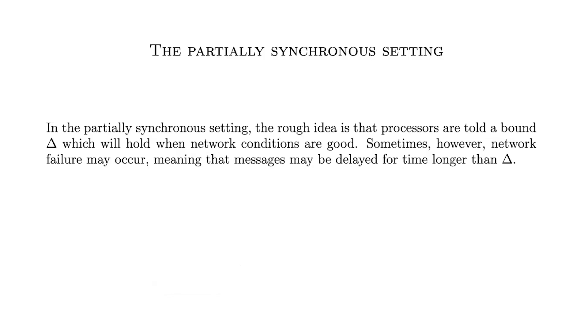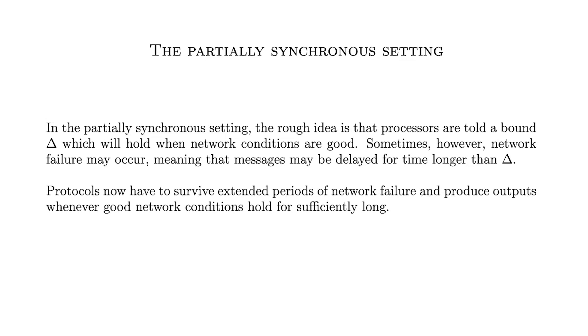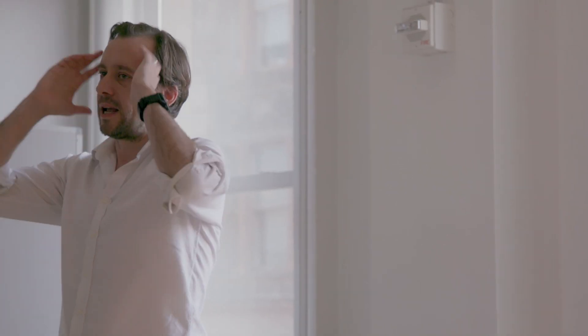Now we move to the partially synchronous setting. The synchronous setting is nice and tidy but maybe not realistic — in real life networks go down and you should be able to deal with that. The rough idea is that processes are told a bound delta which holds when network conditions are good, but sometimes network failure happens and messages might be delayed for arbitrarily long periods. Protocols have to survive extended periods of network failure and produce outputs when conditions are good — maintaining consistency during failure, and confirming new transactions once conditions recover.